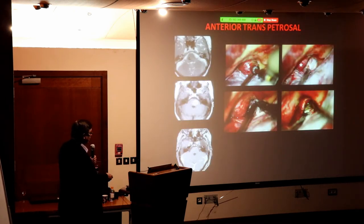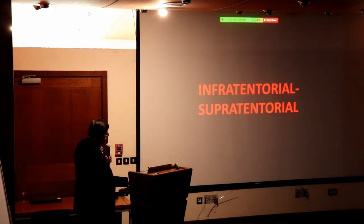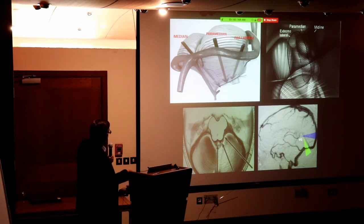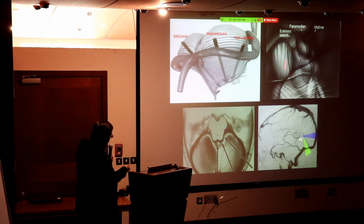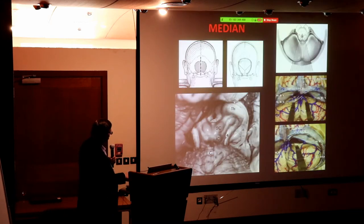Transpetrosal approaches for pontine lesions. Posterior approaches: median, paramedian, far lateral, or extreme lateral, depending on where the lesion is located. These give different views of the back and lateral brain stem. The median approach shows the superior and inferior colliculi — you are directly on the back of the midbrain.